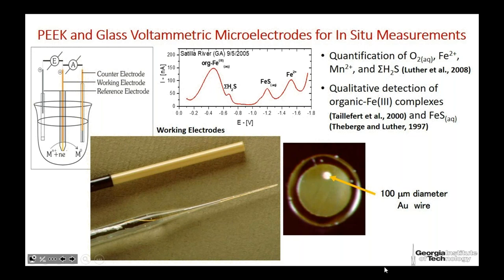The electrodes we use have a five-centimeter-long tip with a 100-micron-diameter gold wire onto which we plate mercury, giving a liquid surface. Species react at that surface. We apply a potential over time and scan the current — every time you apply a potential you have a redox reaction generating a current, forming peaks, somewhat like a chromatogram.